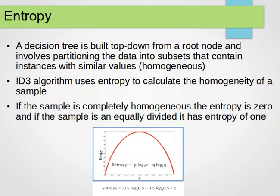Entropy, in case you're not familiar with it, is some sort of measure of uncertainty. The value of entropy is computed for two or maybe three classes or categories, by multiplying the probability of each category by the log base two of that probability and summing over all class values. A decision tree is built top-down from a root node and involves partitioning the data into subsets that contain instances with similar values — they need to be homogeneous. The ID3 algorithm uses entropy to calculate the homogeneity of a sample.